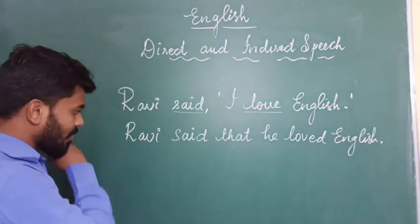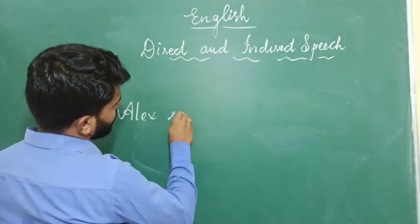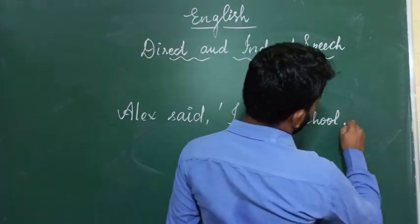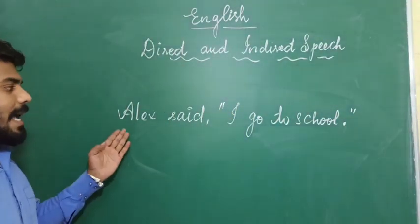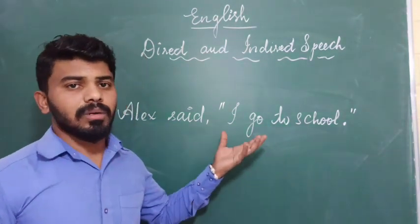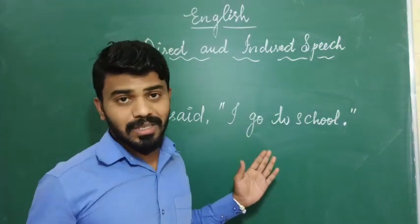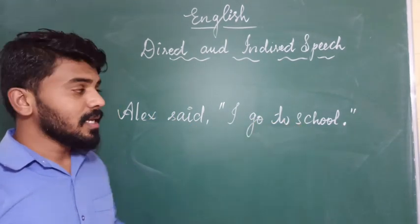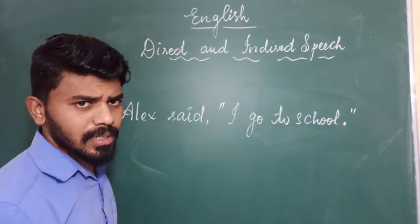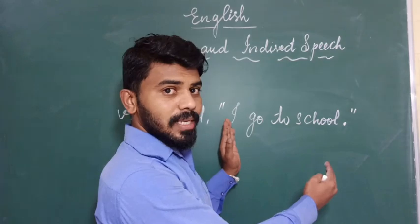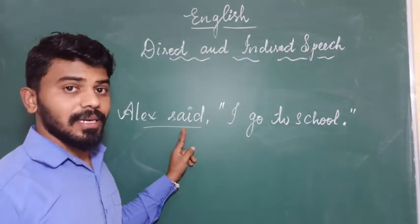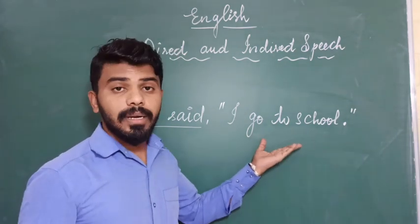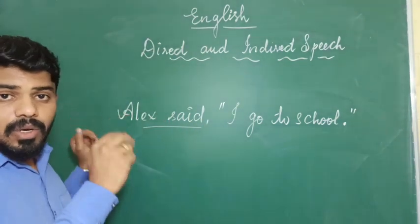Let me give you one more example. Here is the sentence: Alex said, 'I go to school.' Whatever is outside the quotes is the reporting part, so 'said' is the reporting verb. Whatever is inside the quotes is the reported part, so 'go' is the reported verb. Keep that in mind: whatever is in the inverted quotes is the reported verb; whatever is outside is the reporting verb.